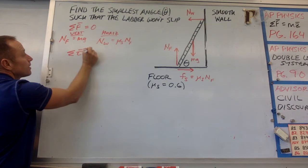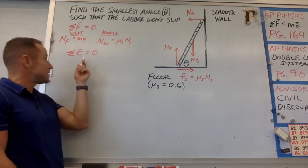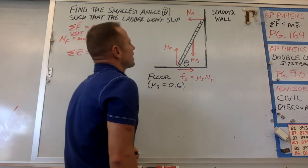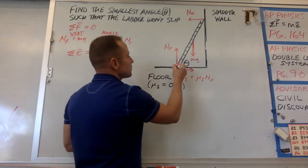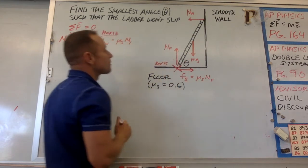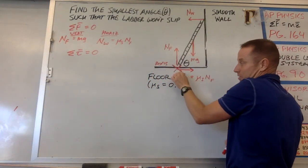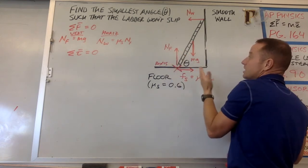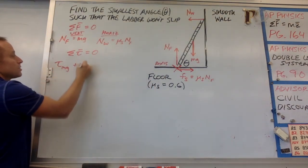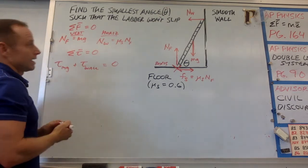Not only is the ladder not translating through space, but it's not rotating either. So the sum of the torques must also be zero. There are choices for where to put the axis of rotation since it's not rotating about any axis. I'm going to put the axis right here at the floor contact point. That means the normal force from the floor and the friction force are right on the axis, so they don't contribute torques. Really there are just two forces making torques: mg and the normal force from the wall.